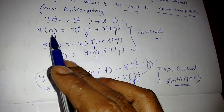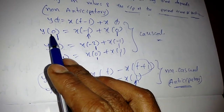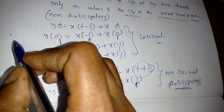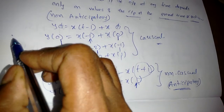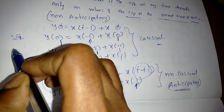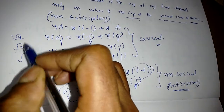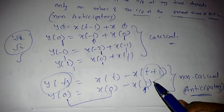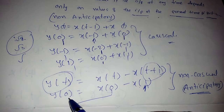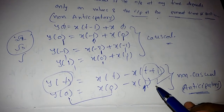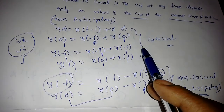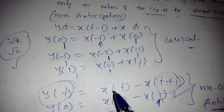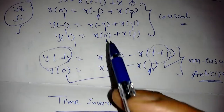We should not conclude based on just one or two values. We need to check at least two positive values and two negative values of time. Sometimes if a square root is involved, check square root of 2 or square root of 3 etc. We must verify at least two to three time values. The moment we get a non-causal result at a single value, we can conclude non-causal. But for a causal system, we must verify multiple different time values.